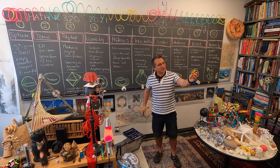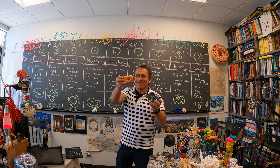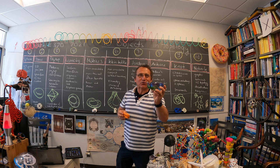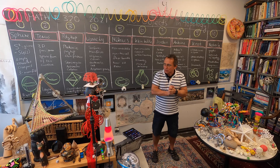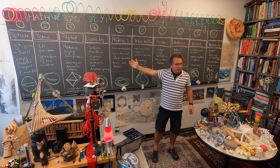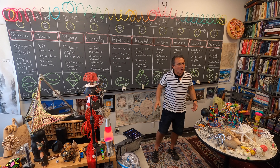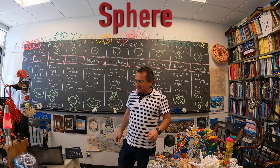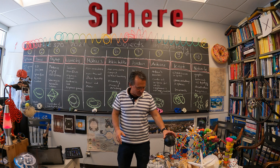Now we have an object which is topologically different. It's kind of crazy that this bagel is topologically the same as this pot. I want to introduce 10 exciting objects in topology. The first object is a well-known object — it's a sphere.